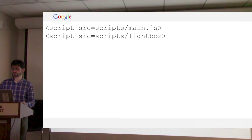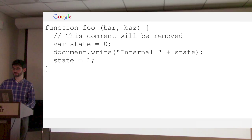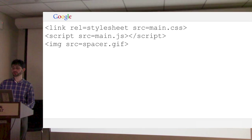We can do the same thing with JavaScript files — we can have two JavaScript files and combine them. We eval one and eval the other, and again we do that in case there are errors in one that would screw up the interpretation of the other. And then we have minification: we can take our CSS and make it a lot smaller, and we can take our JavaScript and make it a lot smaller.